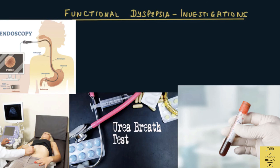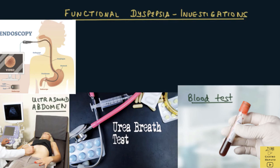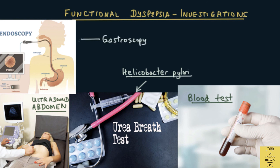Investigations done in functional dyspepsia might include blood tests such as a full blood count, kidney and liver profiles, calcium, thyroid study, and blood tests for gluten sensitivity or celiac disease if suspected. Other investigations include ultrasound of the abdomen, urine tests, urea breath tests for Helicobacter pylori, and gastroscopy — a procedure where a thin flexible tube is passed through the mouth to the stomach.